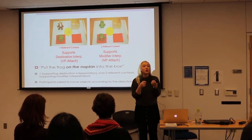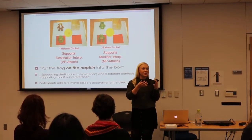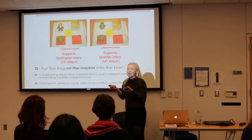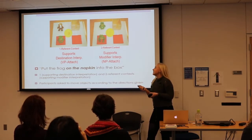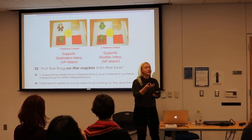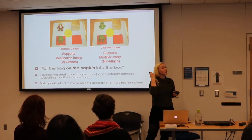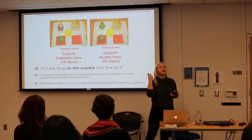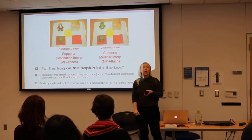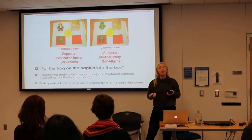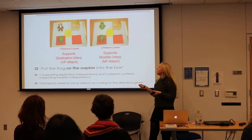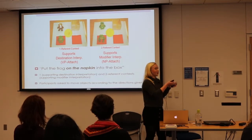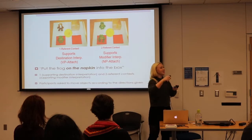Going back to our adult data, in the one-referent context — the context you can see in this image — that supported the destination interpretation. Adult participants, when they heard an ambiguous sentence and saw this one-referent context, typically favored a destination interpretation, meaning they would put the frog on the napkin and sometimes into the box.